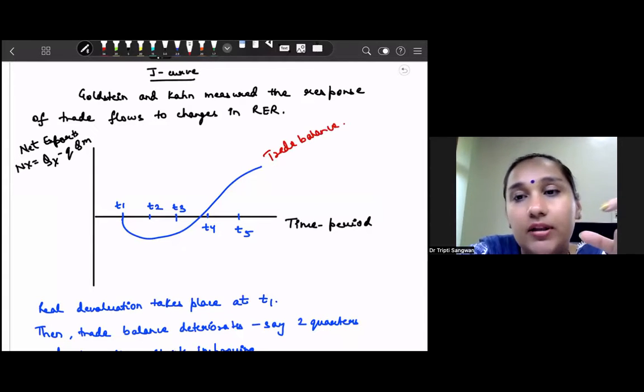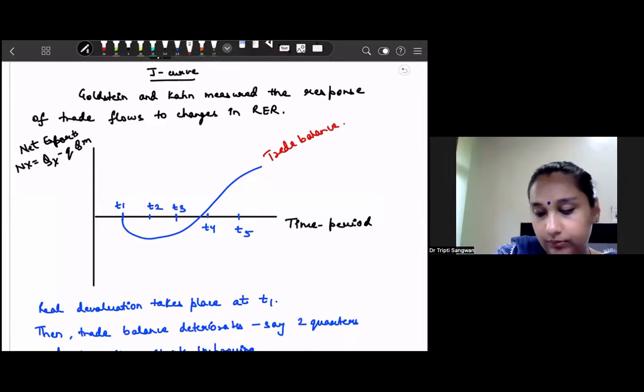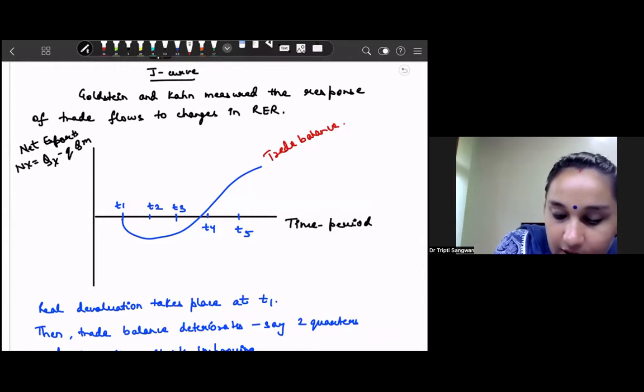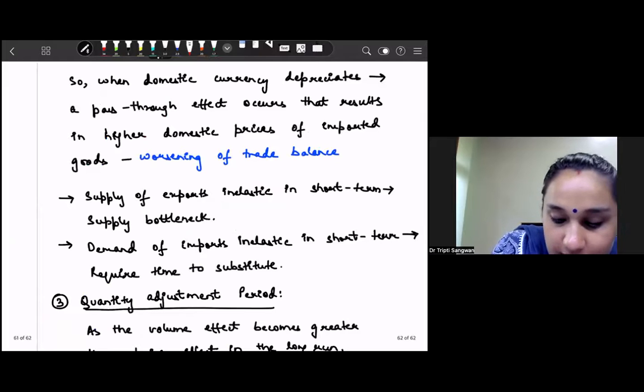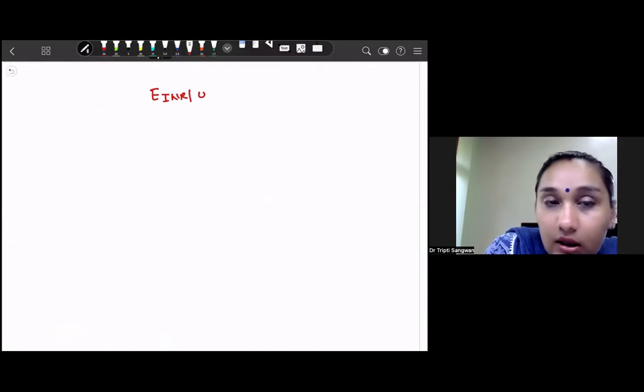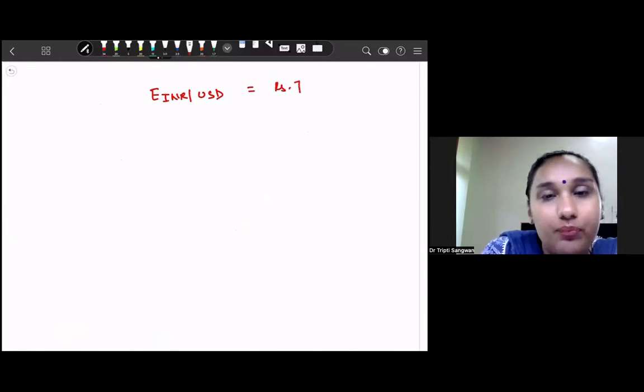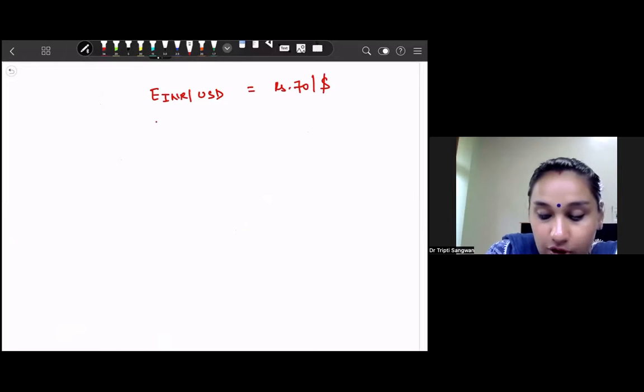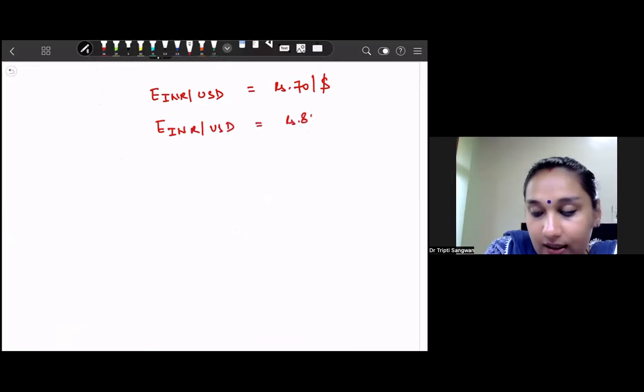Means that if we presently suppose the exchange rate per USD is given to be rupees 70 per dollar, now we are saying that our currency is depreciated which means that exchange rate per USD is now rupees 80 per dollar.